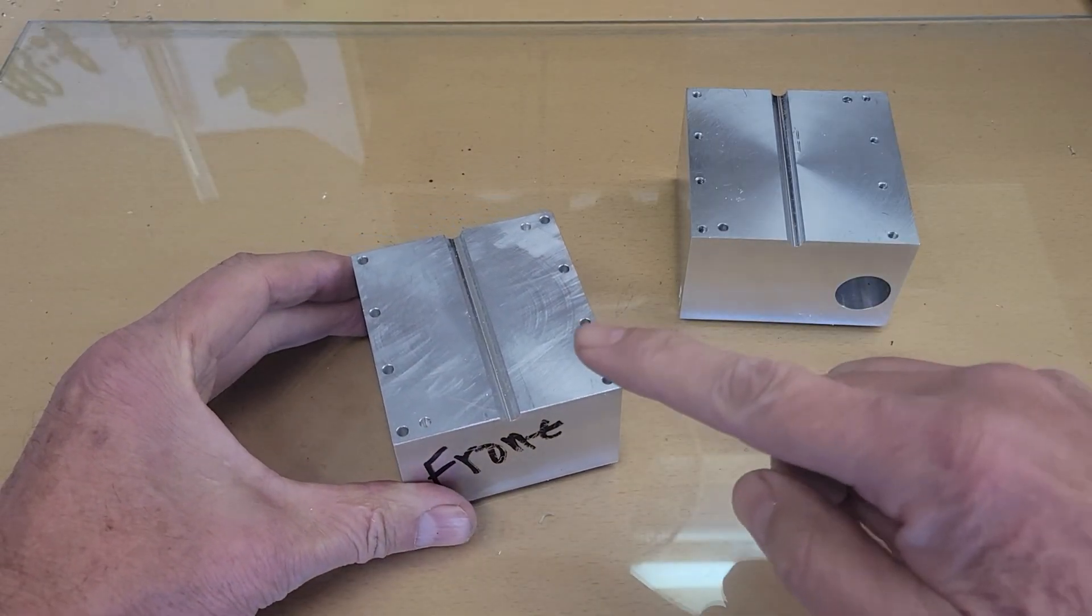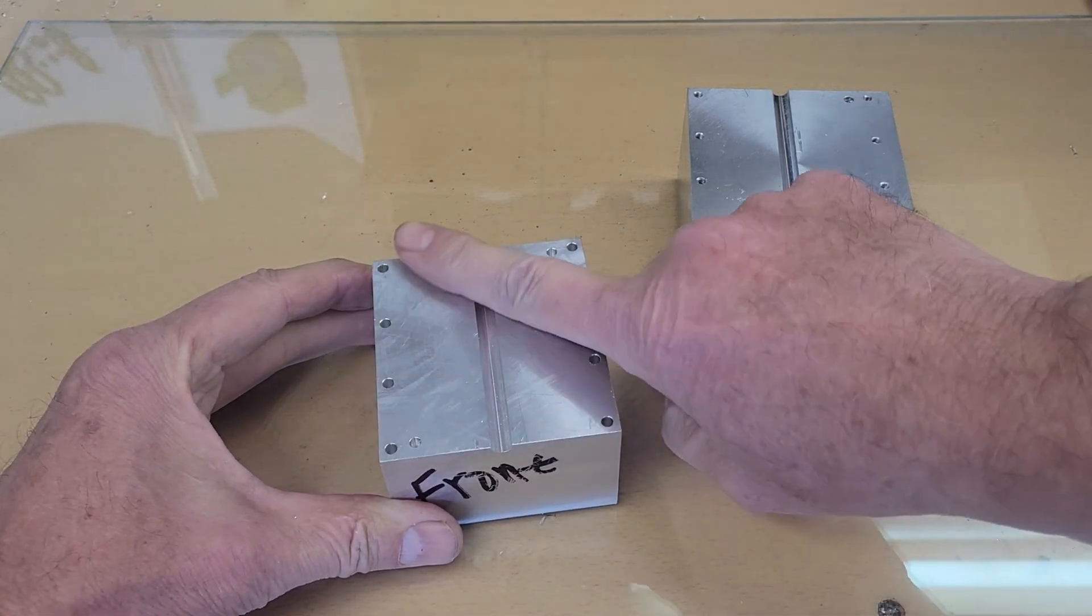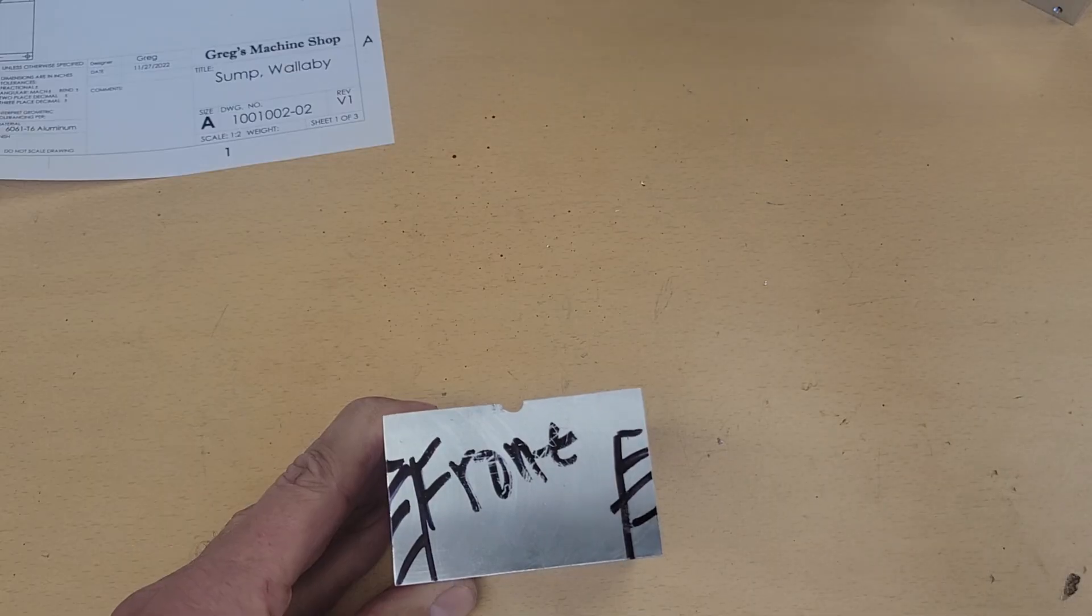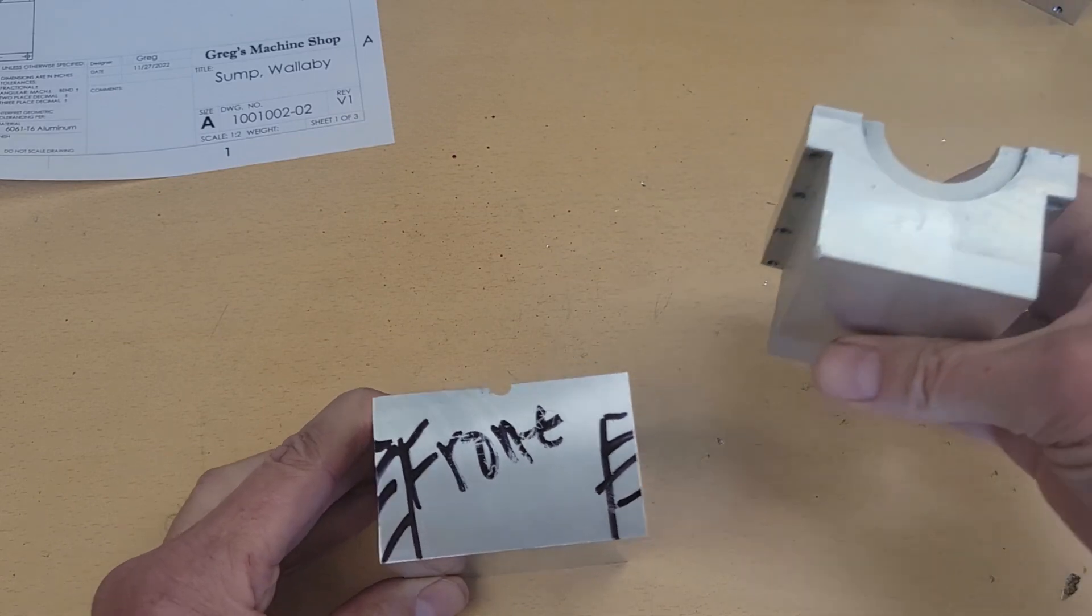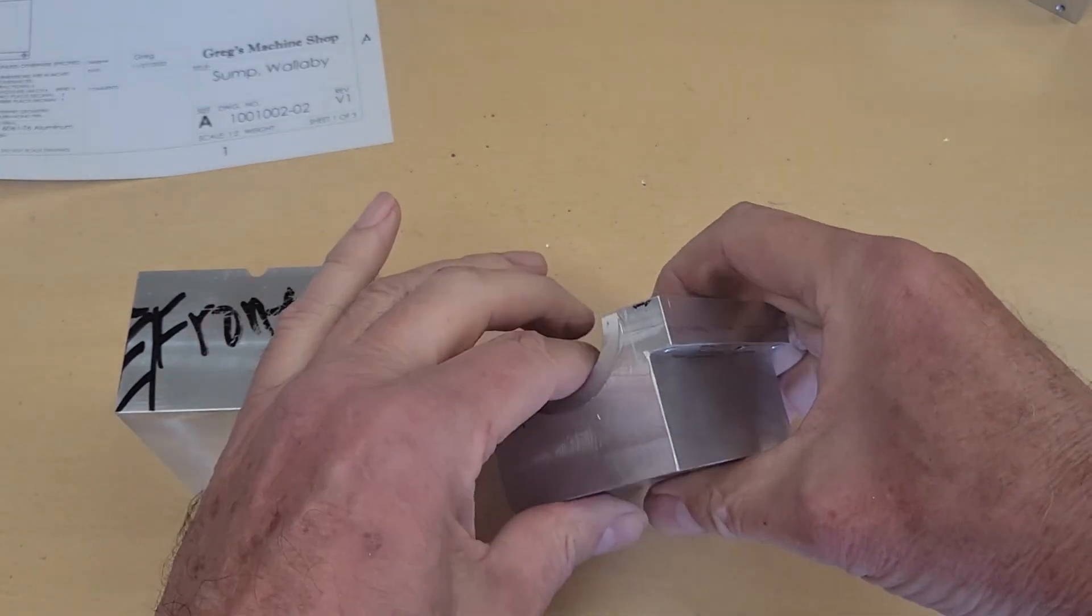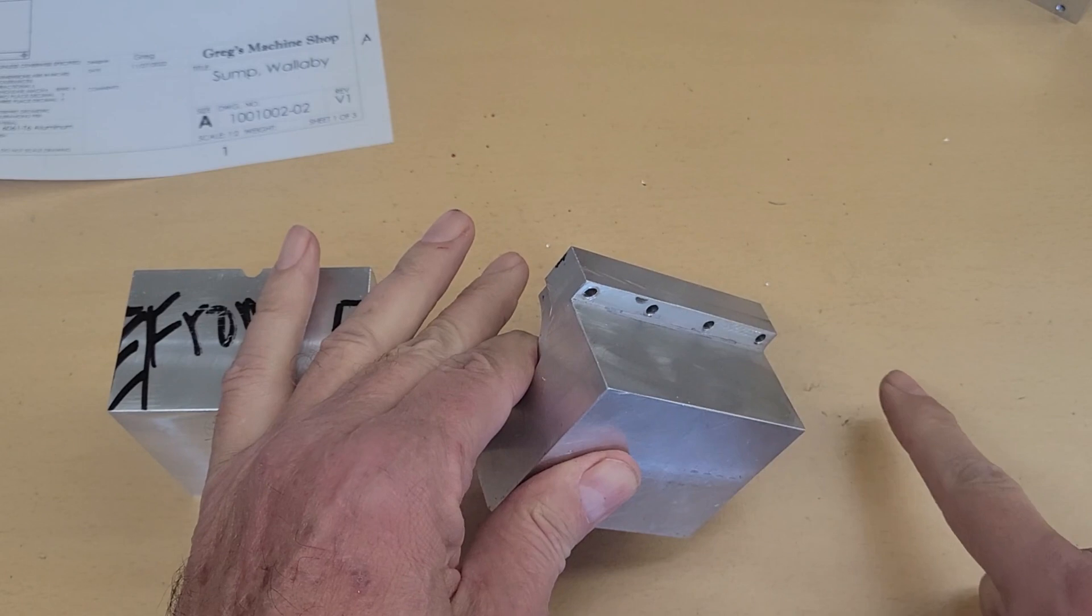So there's the sump with the machining completed on the top. We need to remove some material from the sides of the sump to give us access to the through holes so we can secure the sump to the crankcase.